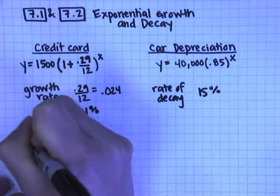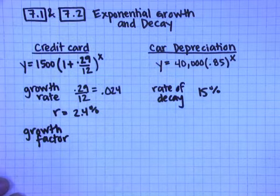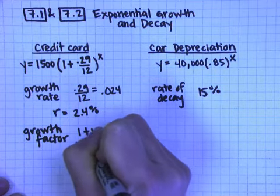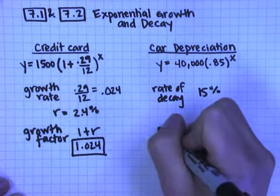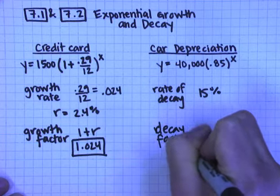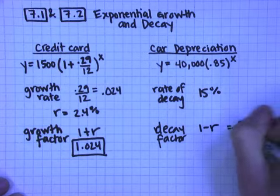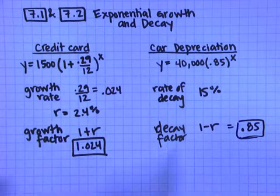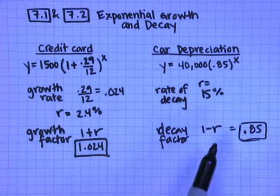And then there's also something called the growth factor, which is related to the growth rate, but just a little bit different. The growth factor is 1 plus r. And so in this case, our growth factor would be 1.024. This is not typically given in a percentage. And our rate of decay, or our decay factor, is 1 minus r. And so for us, this would be the 0.85, given as a decimal and not as a percent. So there's the growth rate, r equals 2.4%, or r equals 15%. And then there's the growth factor and the decay factor, which are not given as percents, but are related to r.